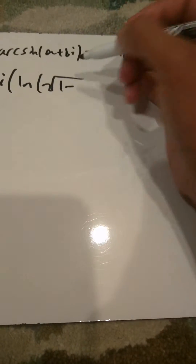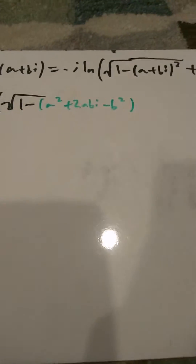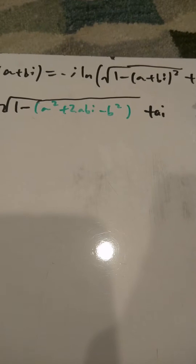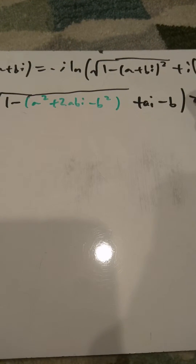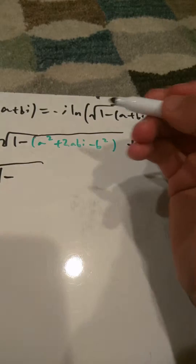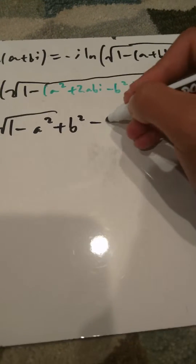So this equals negative i times ln of the square root of: one minus (a plus bi) squared equals one minus a squared plus 2abi minus b squared, because bi times bi is negative b squared. Plus i times (ai minus b). That's easy to do.